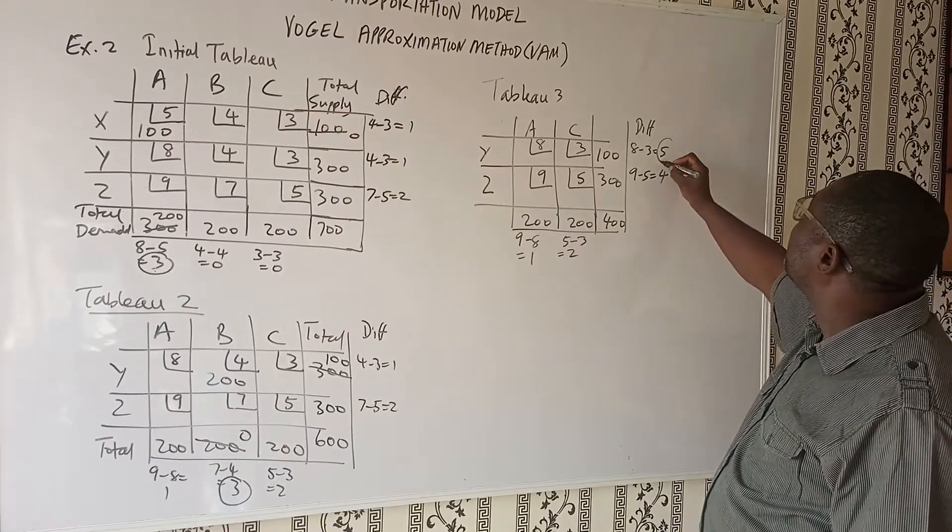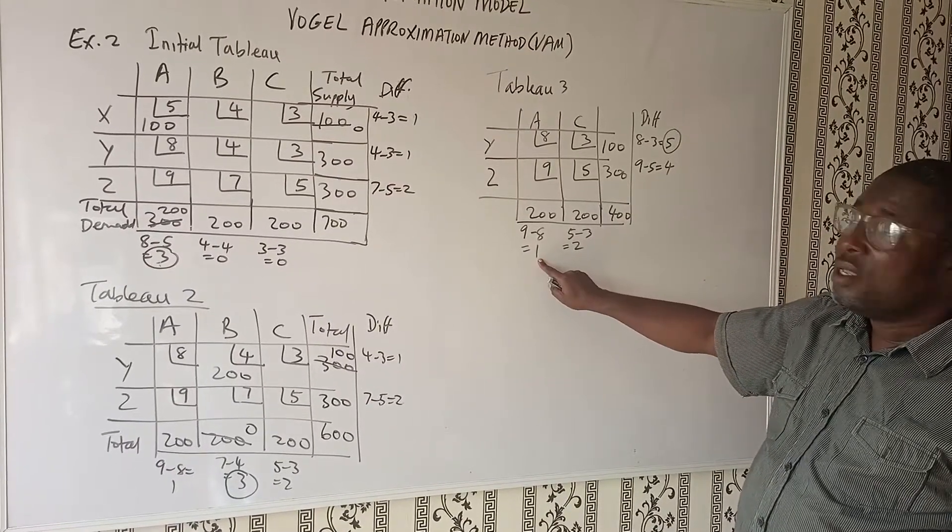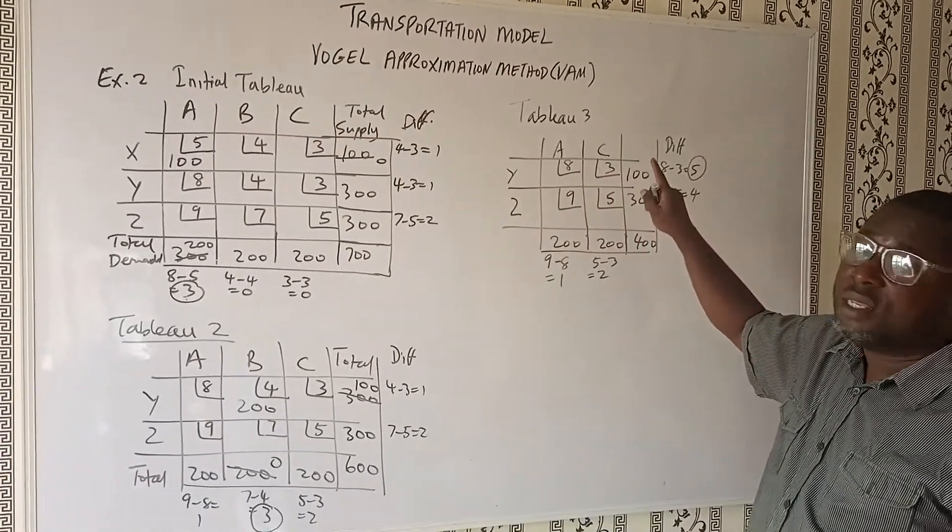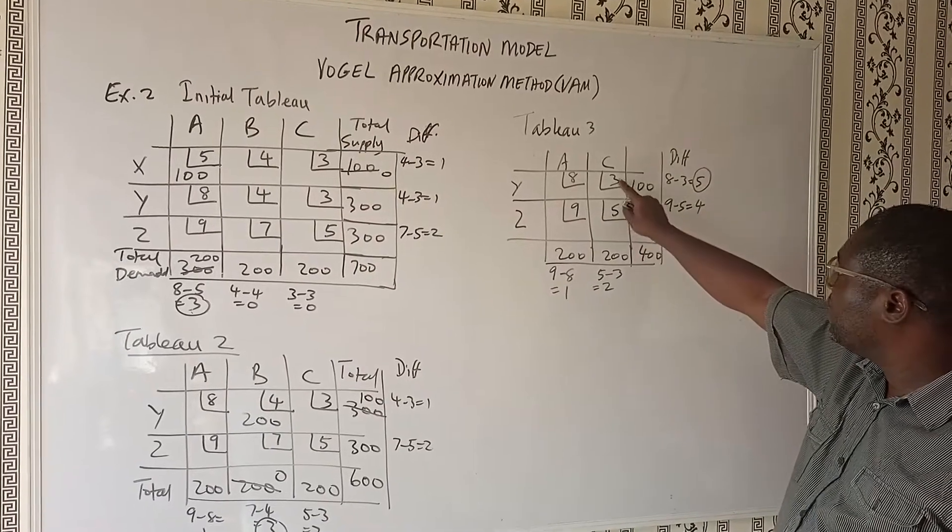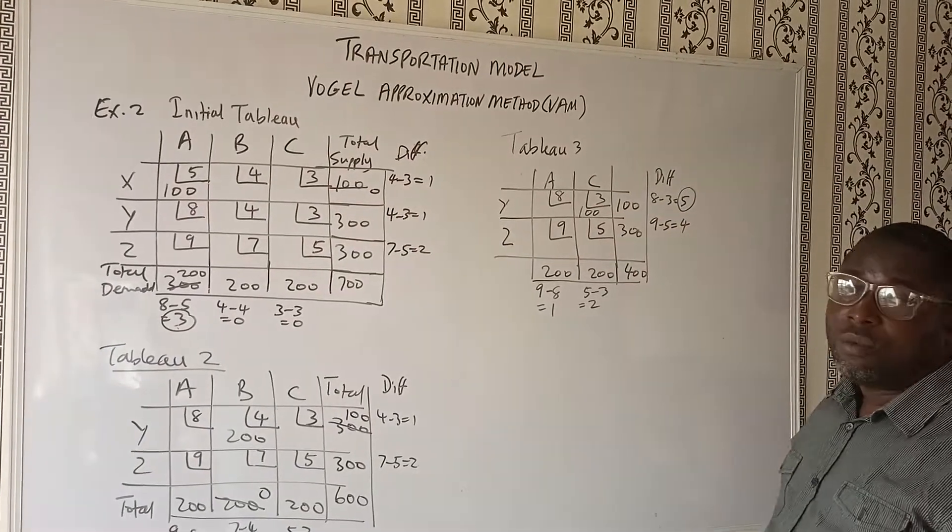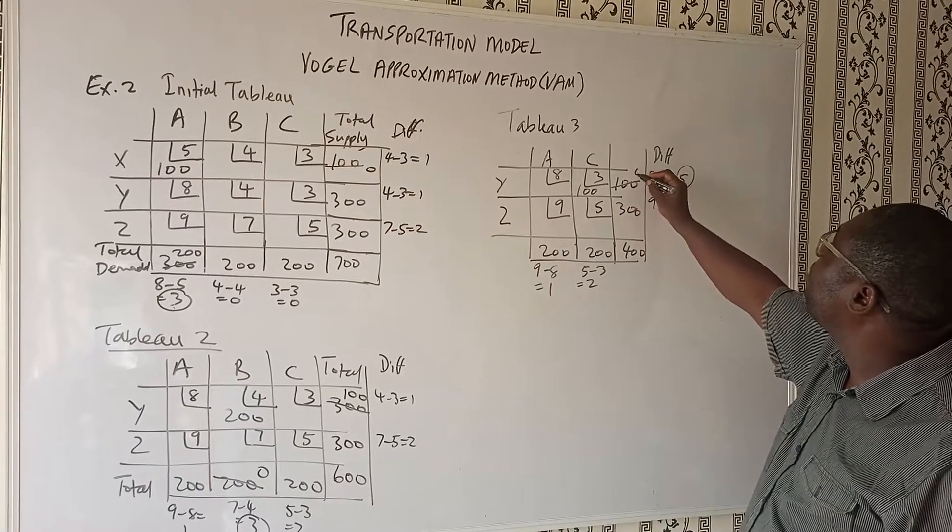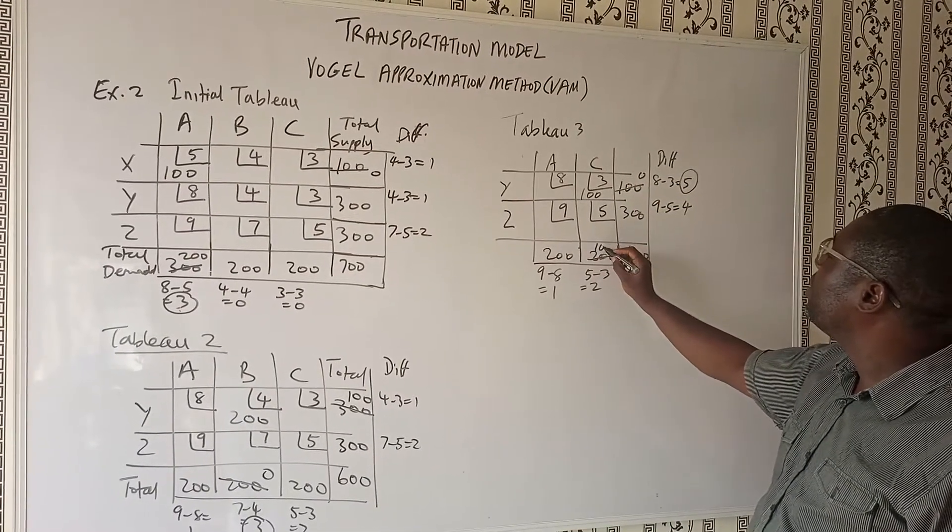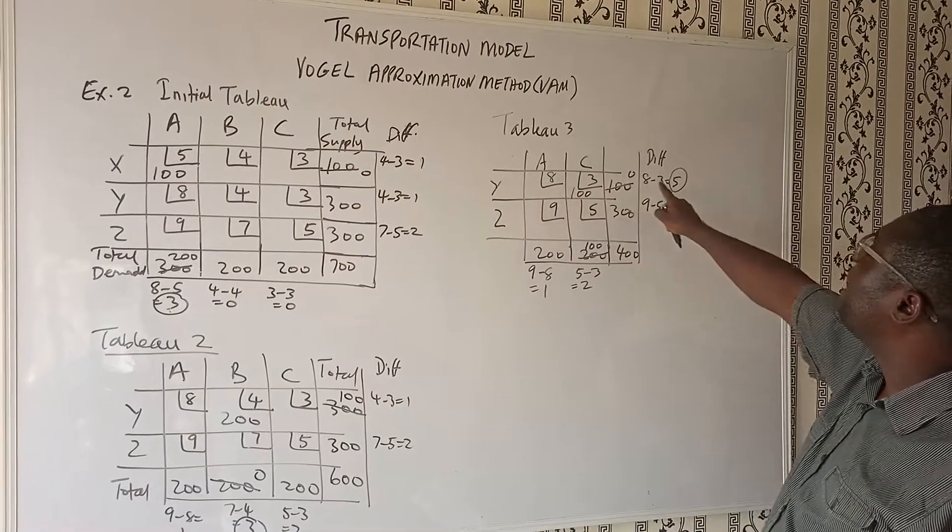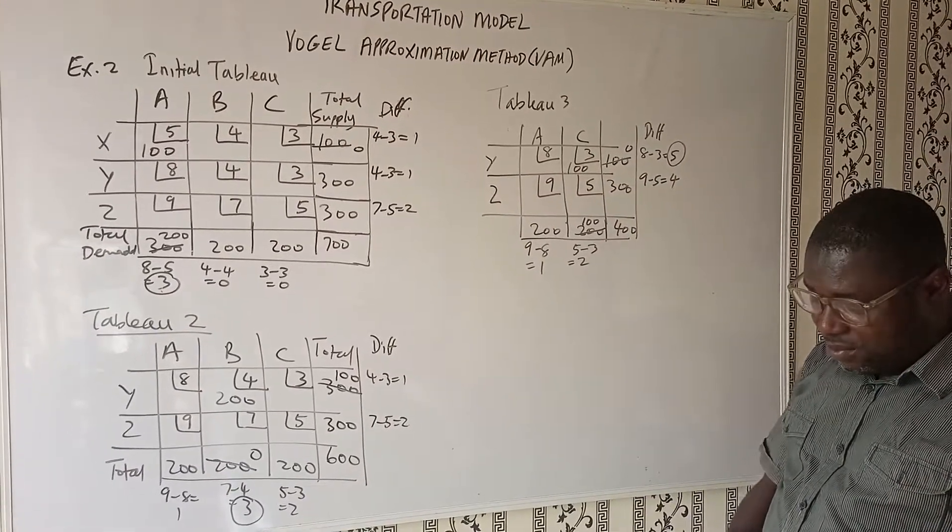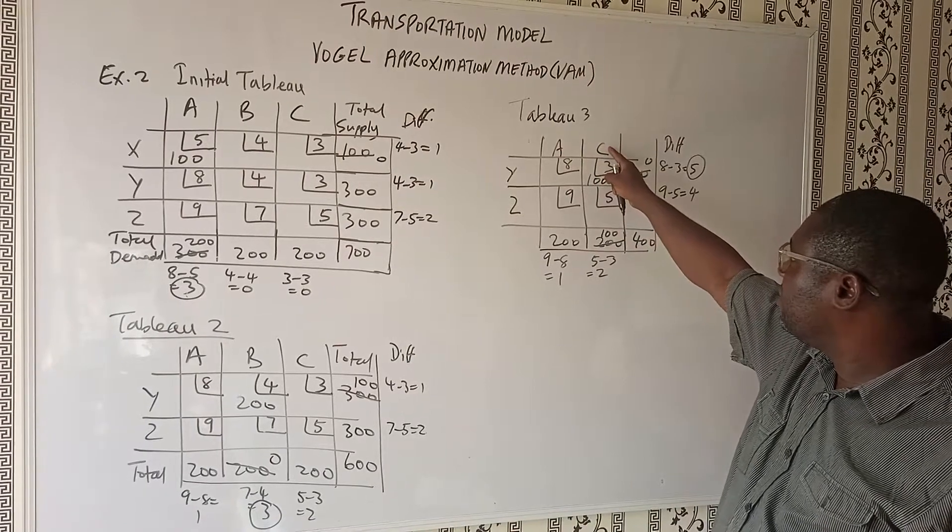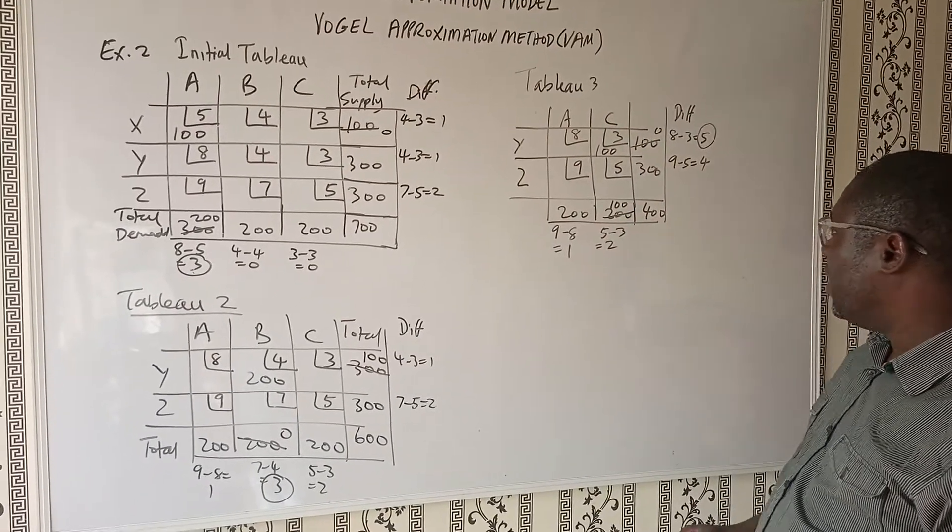The focal here is 5, being the highest of the differences. So having identified this row, between the two, which is the lower of the cost? This is the lower of the cost. So we proportion volume in here. And we are going to proportion 100 in here. So that this goes off, this becomes 0, and we are left with 100. We are left with 100. So we have eliminated row Y. We are left with 100. So we are left with having A, C and Z.